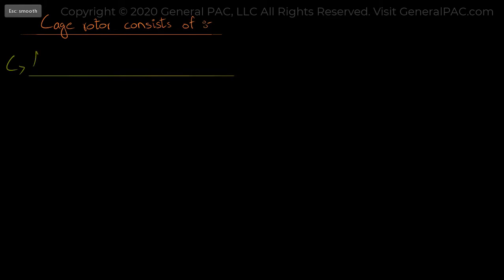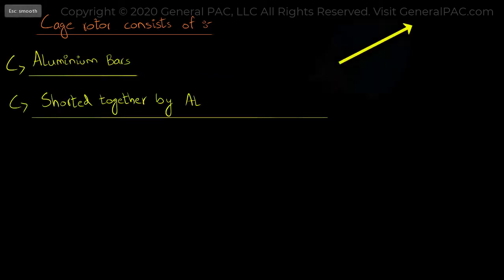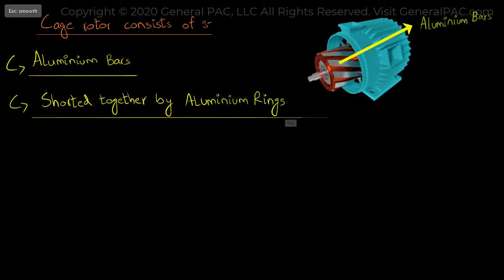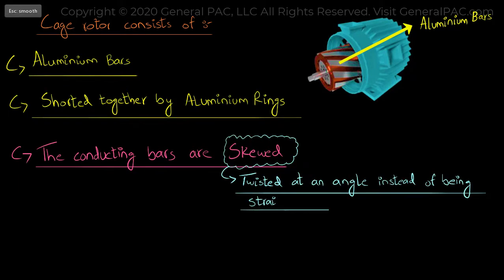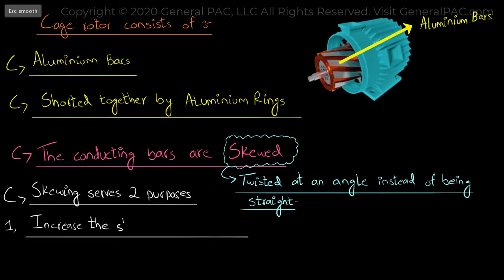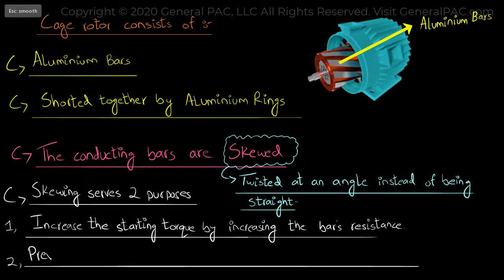Now a cage rotor consists of aluminum bars which are shortened together at both ends by aluminum rings so that the induced current may flow through them. Second, these conducting bars are generally skewed and they are twisted at an angle instead of being straight. The skewing serves two purposes: to increase the starting torque by increasing the bar resistance and to prevent the magnetic locking of rotors or else the motor will not start.